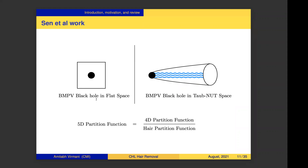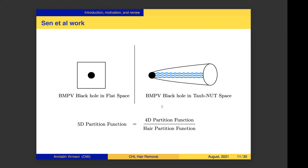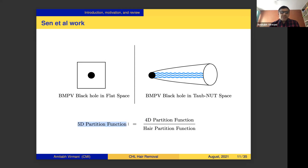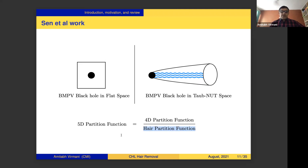The wavy lines in the diagram represent the hair on the BMPV black hole in Taub-NUT. These hair exist essentially because of features of the Taub-NUT geometry. The 5D partition function is calculated by the microscopic theory at infinity for the 5D setup, and the 4D partition function is calculated at infinity for the 4D setup. The idea is that if we remove the hair partition function from the 4D partition function, the two things come to agree.